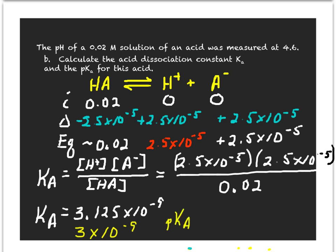Our pKa — that 'p' always means the negative log of whatever number is specified — so our pKa is going to be the negative log of 3.125 times 10 to the minus 9th. We take the log of that, we get minus 8.505. So the negative of the log would be 8.5, and that would be the best way to report that answer.